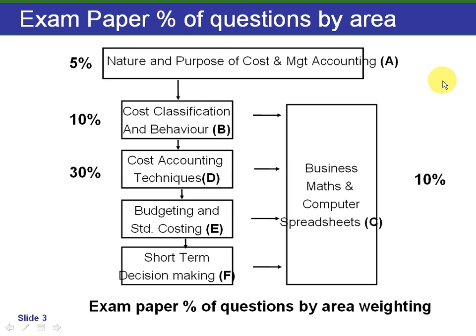The next section, at 30%, is cost accounting techniques. This section covers absorption costing, marginal costing, process costing, job and service costing, and is a major section of the paper.